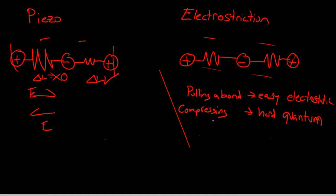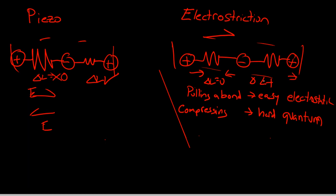Therefore, since it's easier to expand than compress — if you apply an electric field and the electric field is going that way — we're going to have this atom going that way and this atom going this way. So this is compressing, and I said compressing is hard, so delta L is zero. And this delta L is going to be positive, because this one is expanding — it's easy to expand.